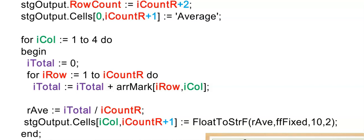Here is an example of a column question. They could ask us to display the average for each term. Each term was stored in a column so I need to start with the for loop for the column. I need to add two to my row count to make space for the label and the values of these averages. I start the for loop and initialize each new term with zero for ITotal. On the inside I loop with my for loop for the row and add the marks for that term together. Still inside the for loop for the column, I calculate the average — ICountR holds the number of learners. Then I display the average in the next row, where IColumn will be 1 the first time the loop runs. When I loop again ITotal starts at zero again for the calculation of term two.